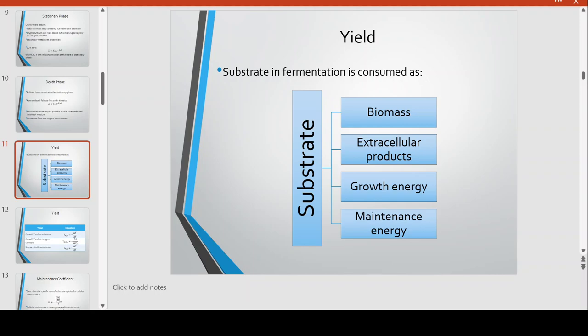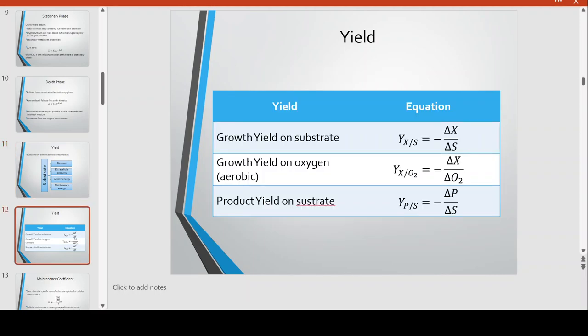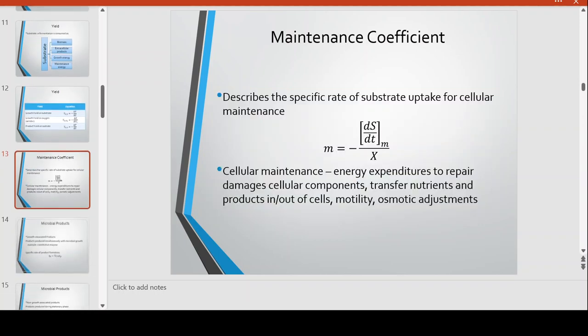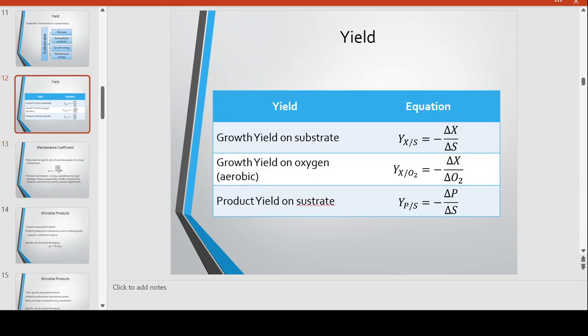The calculation of yield follows our material balance equations. The growth yield on the substrate is the change in the amount of cells per substrate consumed. The growth yield on oxygen is the change in cell number per consumption of oxygen. The product yield is the change in product concentration per change in substrate concentration consumed.